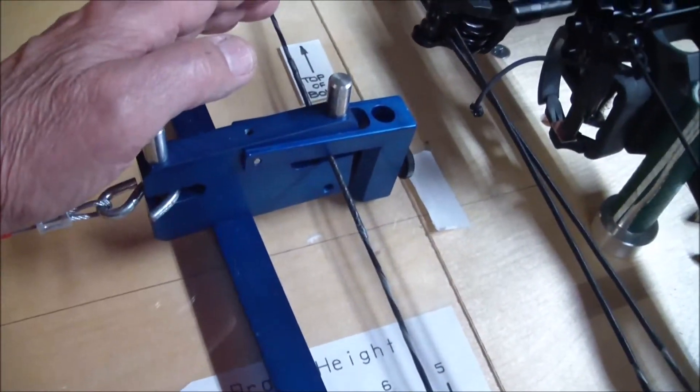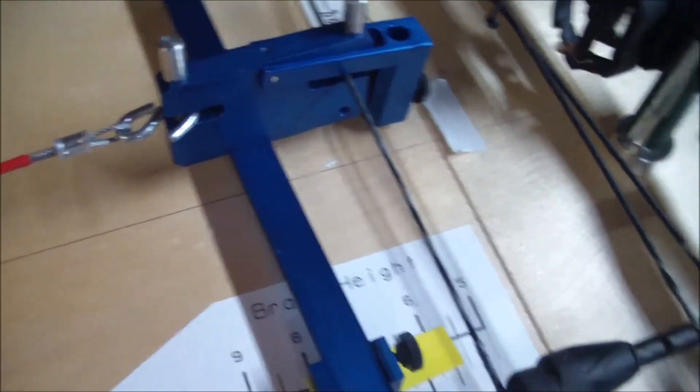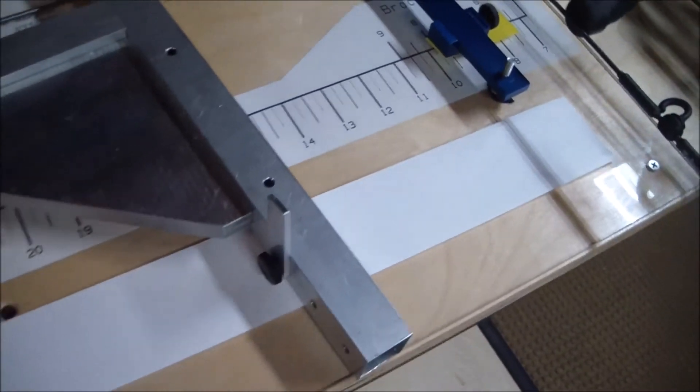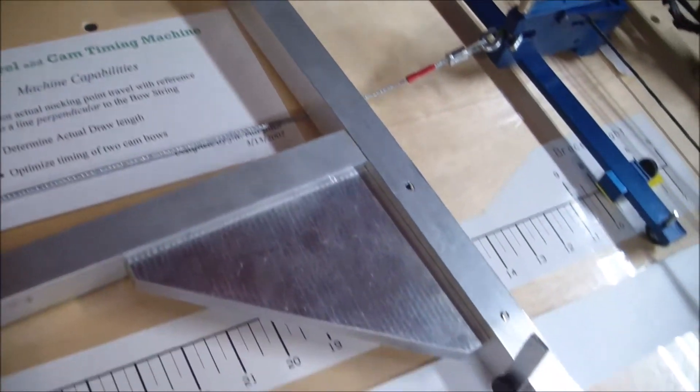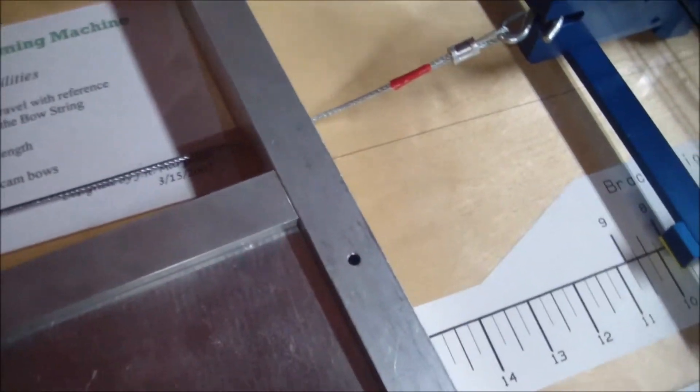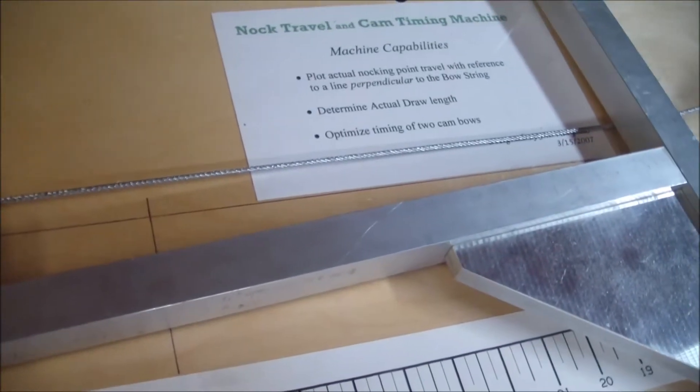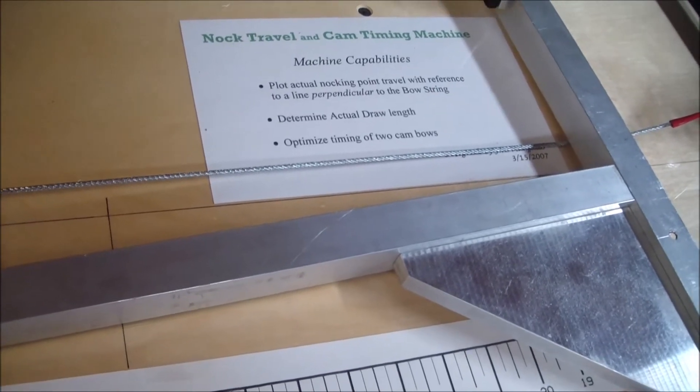That reference line is a line drawn that's perpendicular to the bowstring at brace height. And to do that, I use this piece of equipment I designed here, which is a very precision square, and it locates the bowstring here and here so I can draw a line that's perpendicular to the bowstring. And then we measure actual knock travel with regard to that reference line.